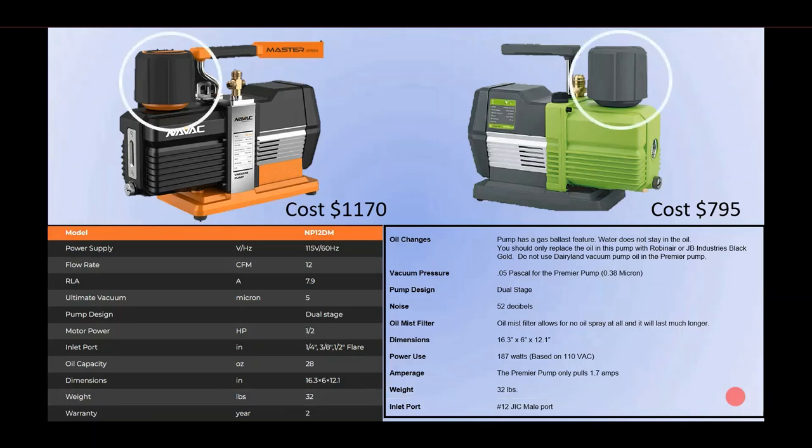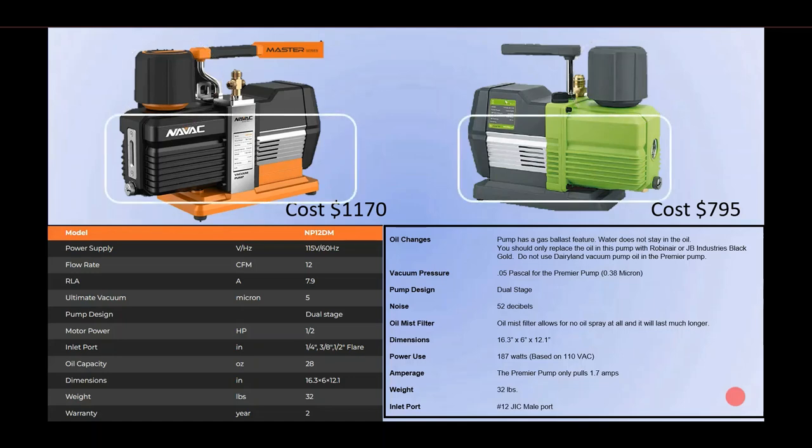The weights are exactly the same at 32 pounds. If you take a look at the filters, the mist filter, they're exactly the same, although they do vary in color. The body style is almost the same. The premier pump and the NAVVAC pump virtually have the same creases, the same venting. Everything is the same except for the side glass.